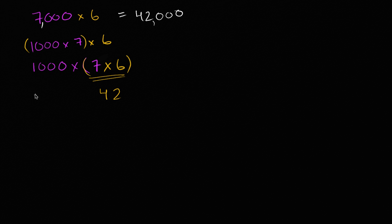So if you multiply the 7 times 6 first, you're going to get 42. And you're going to have 1,000 times 42. So you could view this as 1,000 42s, or maybe a little bit more intuitively, you could view this as 42,000s. So once again, we get to 42,000.